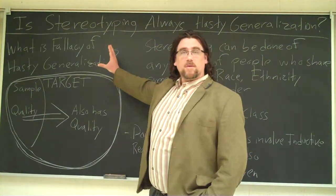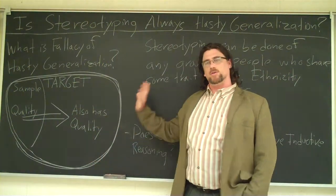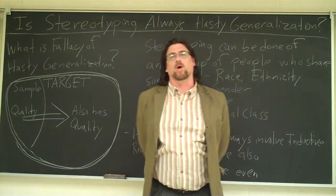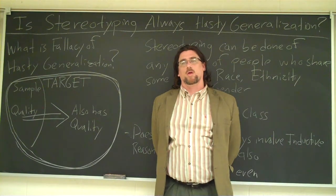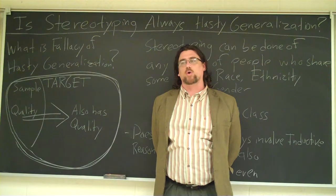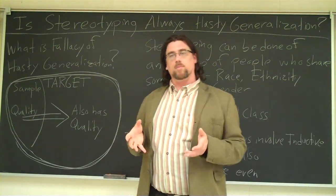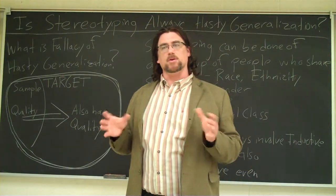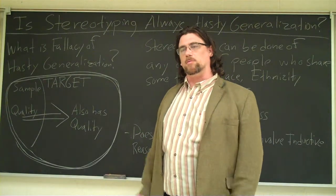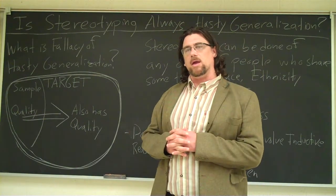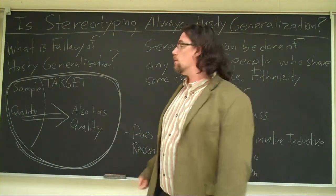So what is the fallacy of hasty generalization? It's useful to have a chart. This is the chart I always use with my students when talking about what are called enumerative inductions — how do you generalize about a group or a given population, a given set of people or things? You generalize by sampling a hopefully representative portion of that group.